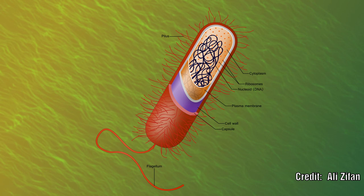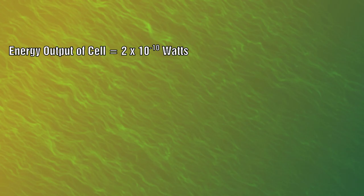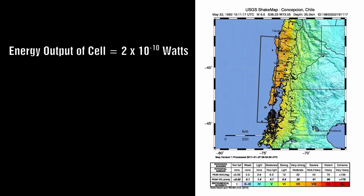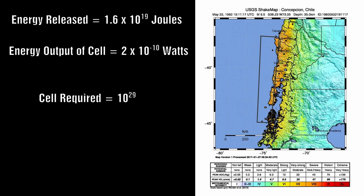He calculates that for an average cell, this may result in a power output of about 2 times 10 to the minus 10 watts. Assuming that the 1960 earthquake released all of its energy in one second, this would mean you would require 10 to the 29 cells. Initially, this may seem like an overwhelmingly large number.